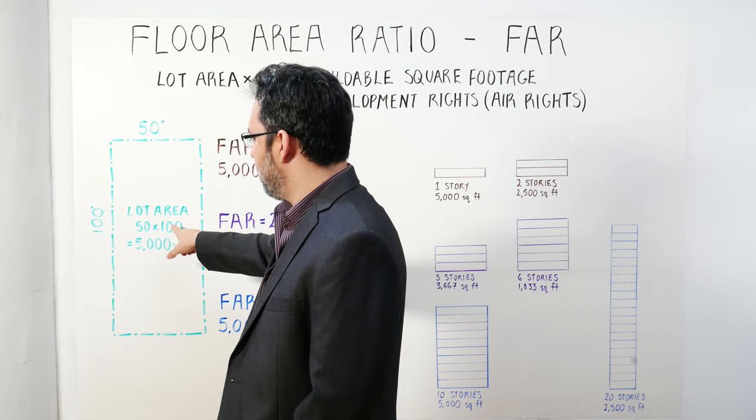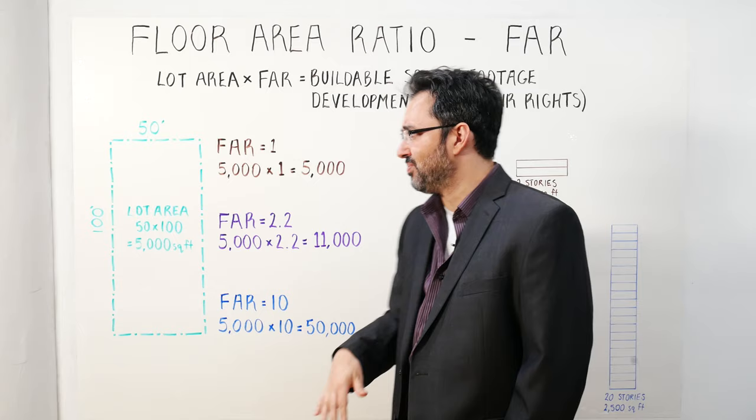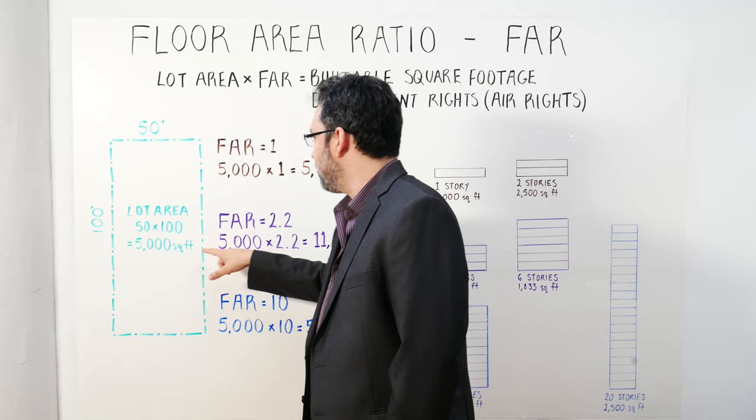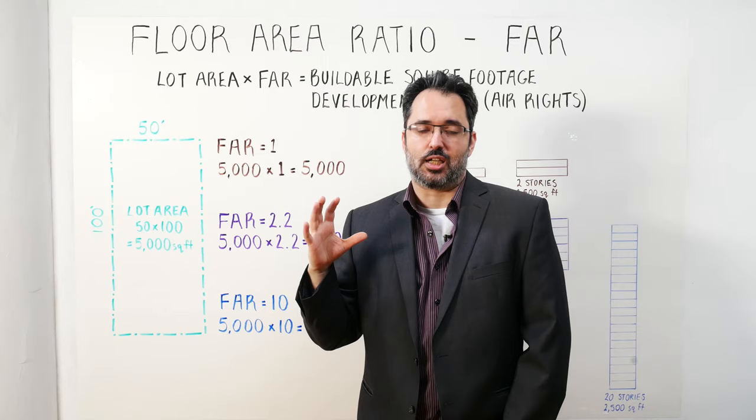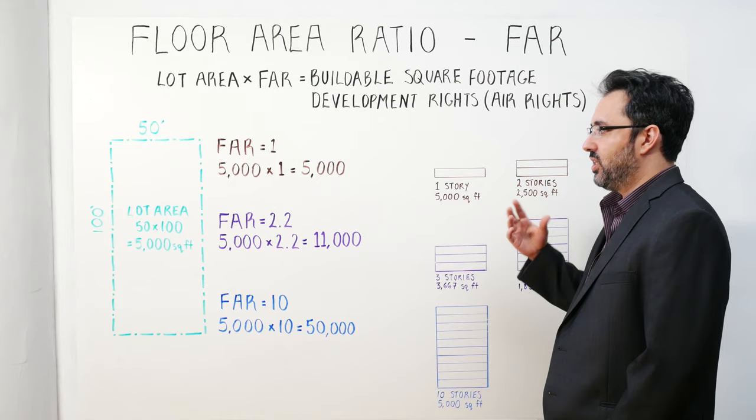The zoning, based on your zoning district, will give you an FAR. So we'll look at two examples. If I'm in New York and I've got an FAR of 1, that means I take 5,000 square feet, multiply it by 1, and I get 5,000. That means I can build a 5,000 square foot building. You can do a one-story building at 5,000 square feet, or a two-story building at 2,500 square feet per floor, but the maximum square footage for the building is 5,000 square feet.